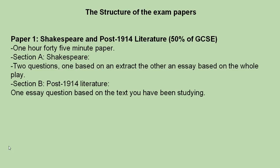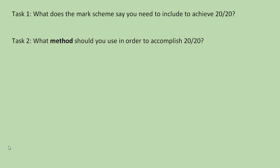Just to remind you very quickly about the structure of the papers: all the GCSEs are terminal, meaning all your exams come at the end with no controlled assessment. This exam paper is 50% of your course, and the second paper is the remaining 50%. It's a one hour and 45 minute paper with two sections. Section A, which we're focusing on, is Shakespeare. In section B you have one essay based on a post-1914 text studied in class.